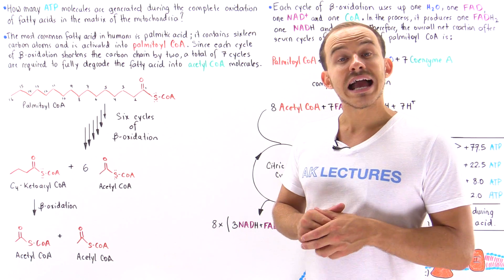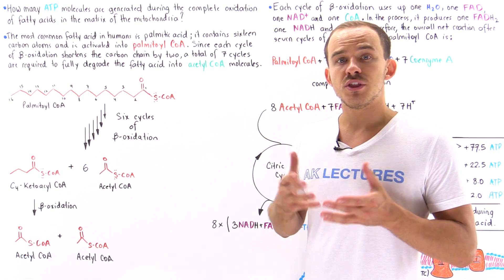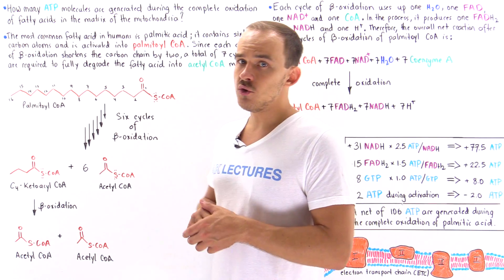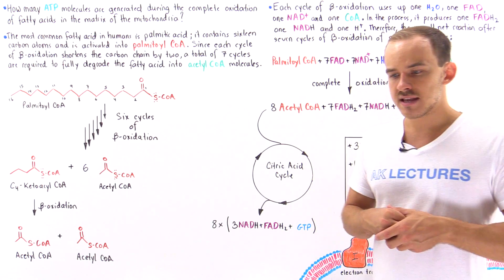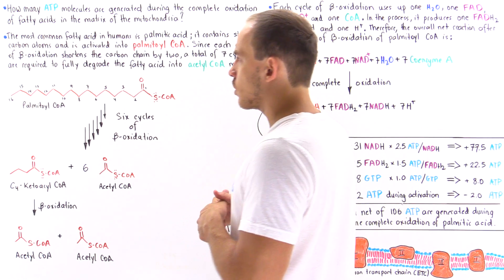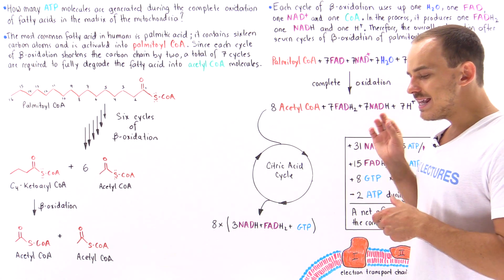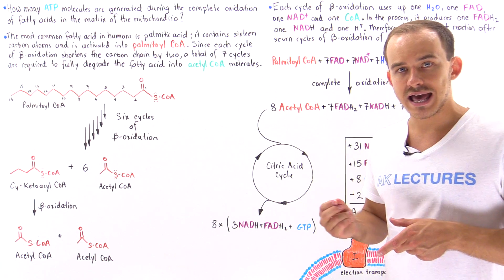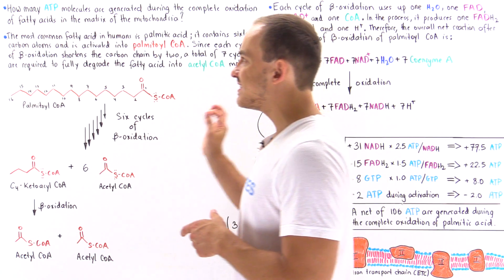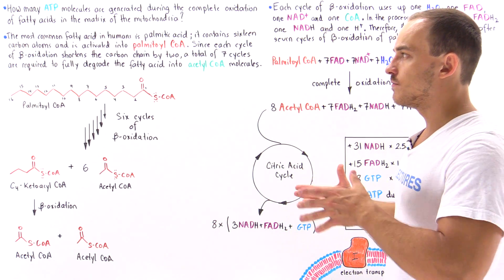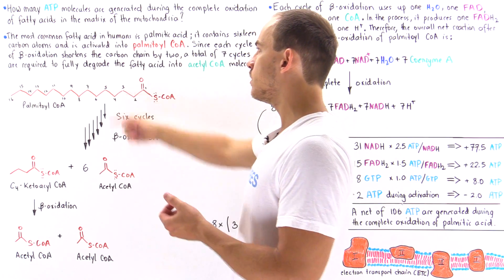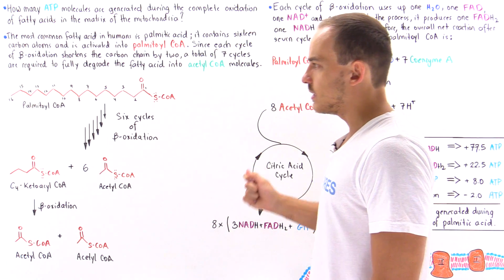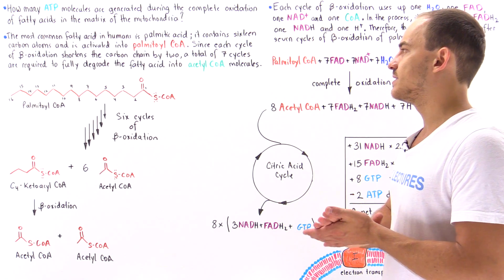The answer varies depending on the length of the hydrocarbon chain within the fatty acid. As our example, we'll use the most common fatty acid found in humans: palmitic acid, which contains 16 carbons. Each time a fatty acid undergoes beta oxidation, it is shortened by two carbon atoms. Because palmitic acid has 16 carbons — or more specifically, its activated form palmitoyl coenzyme A — a total of seven cycles of beta oxidation will cleave it down into acetyl coenzyme A units.